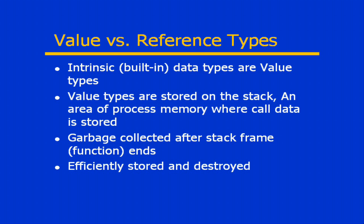As an example, the intrinsic, or those built-in data types, they're actually value types. A value type is a type in which the data is stored on the stack — that area of processed memory where the actual variable or call data is stored. The garbage collection actually happens after the stack frame, usually defined by the function that defines the scope of the call. After that function ends, that's usually when the garbage collection for stack data takes place. This means that value types are designed to be very efficiently stored and very efficiently destroyed.